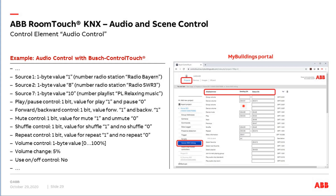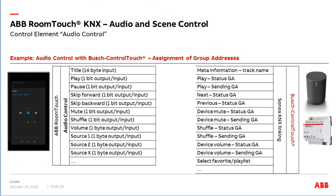When the Control Touch receives a telegram to go to 50%, the volume goes to 50% and it sends back the status 'I'm now at 50%'. For playing, we send a one-bit value of 1, the speaker starts playing, and it responds with value 1 indicating music is playing. We link group addresses from the group address view via drag and drop — the same for shuffle mode, repetition, forward/backward, and favorites.